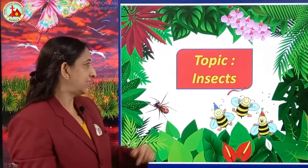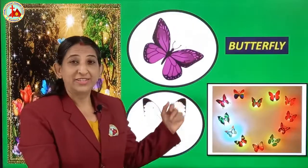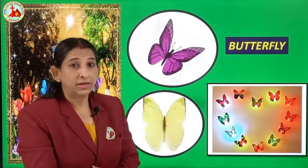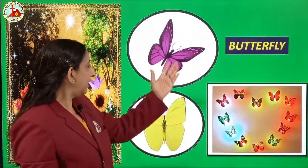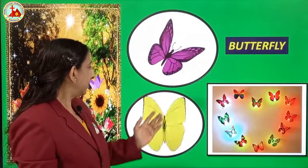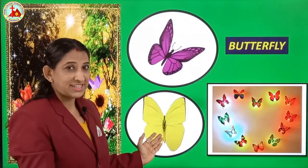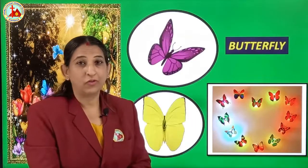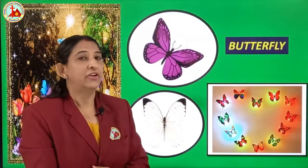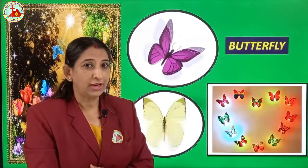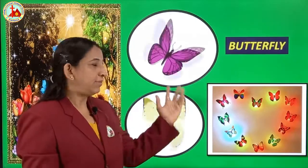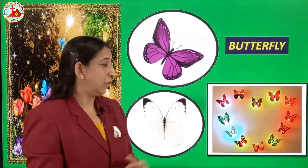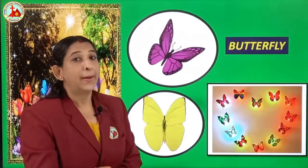The very first is butterfly. This is a colorful insect. Can you see the colors? Purple color. See how the colors are changing — these are all different colorful butterflies. Which insect is colorful? Remember butterfly. Butterfly is a colorful insect.